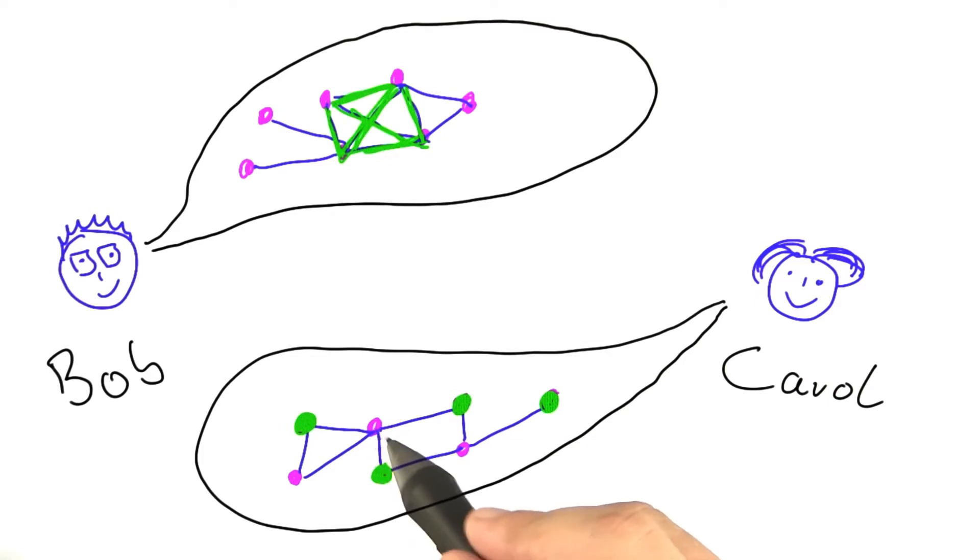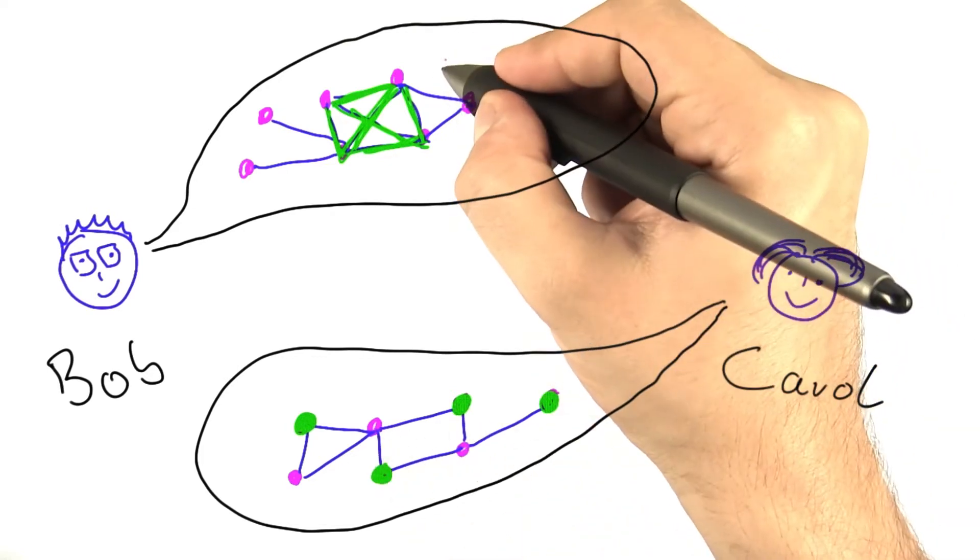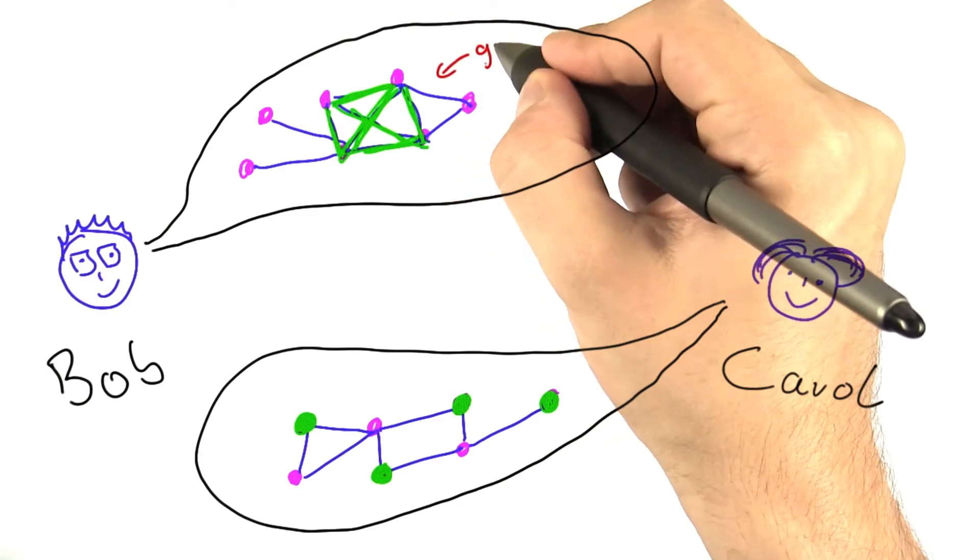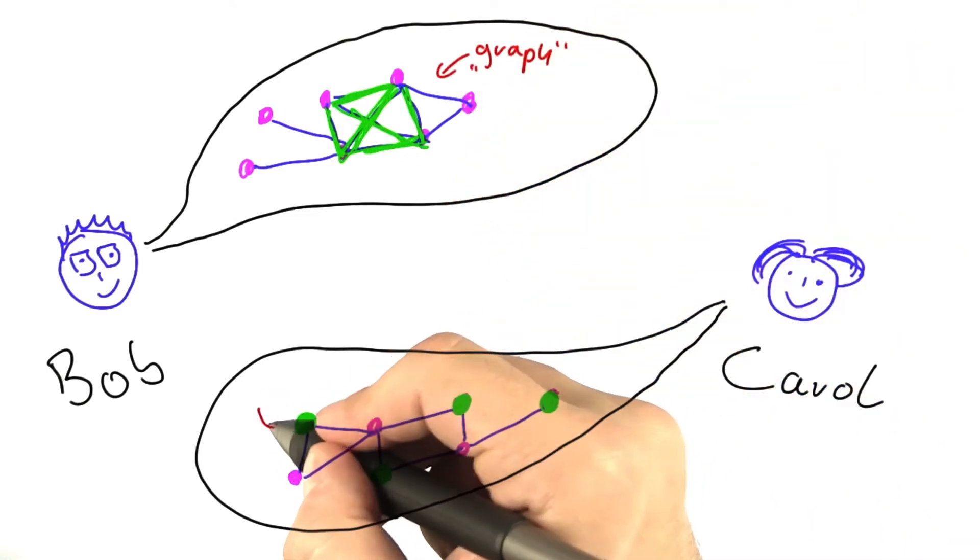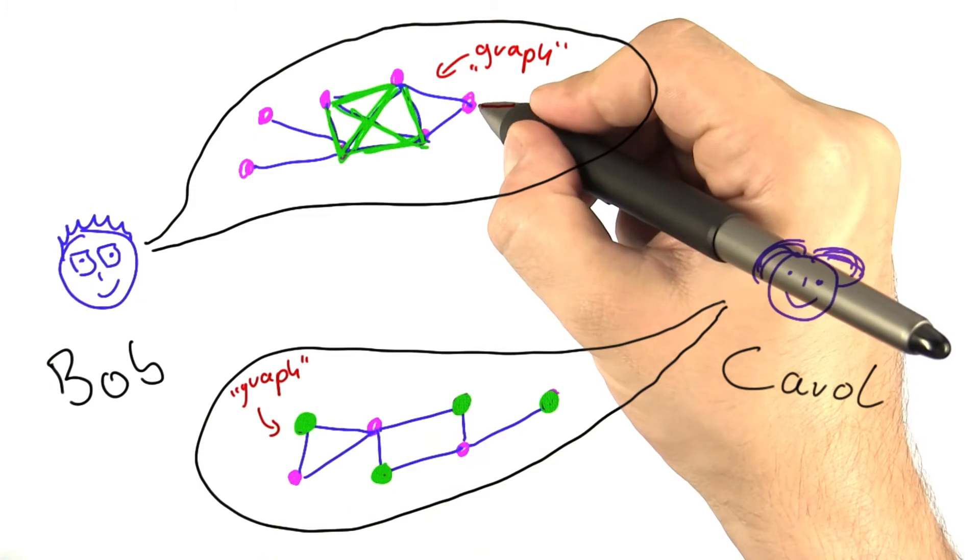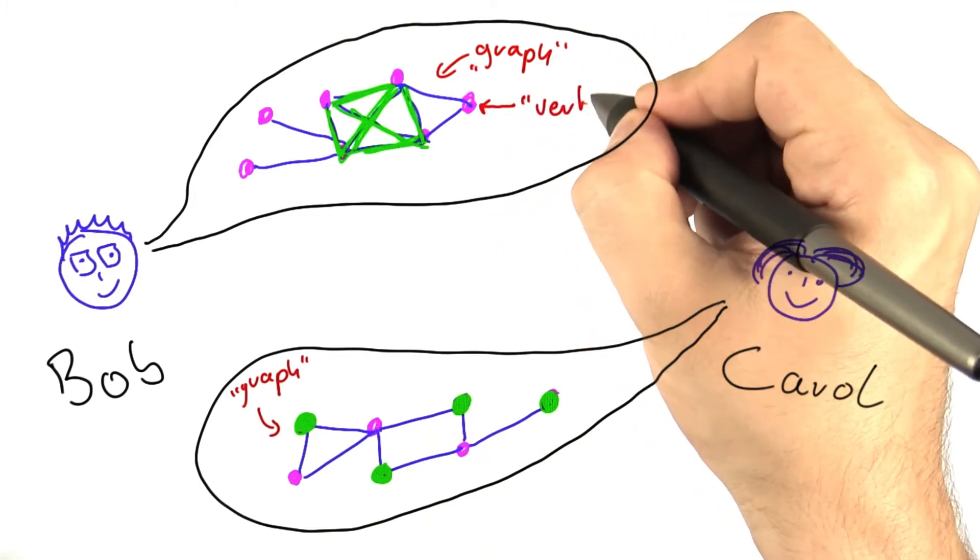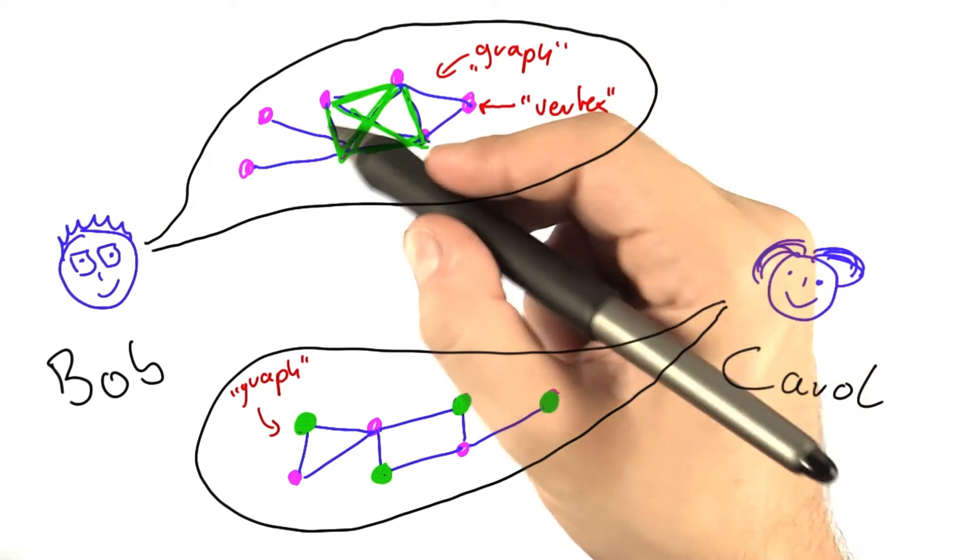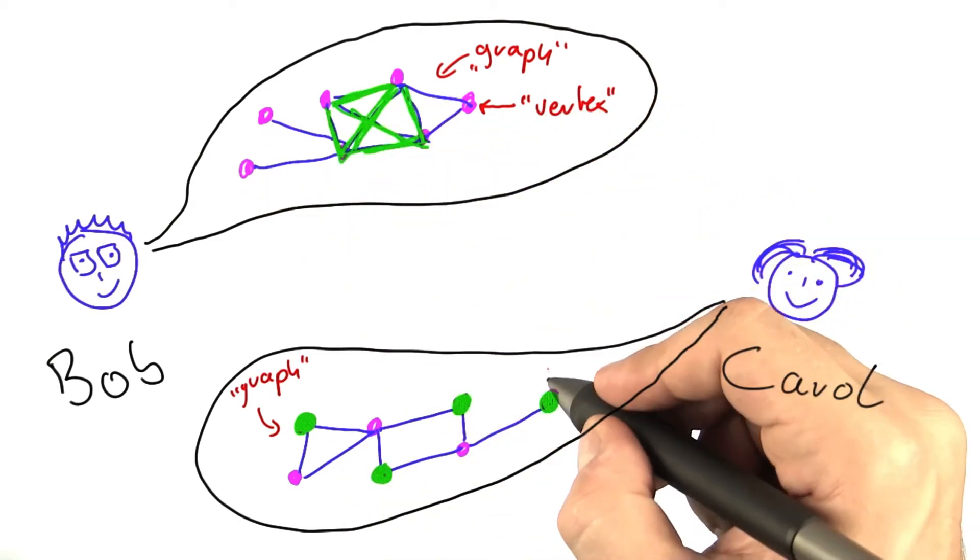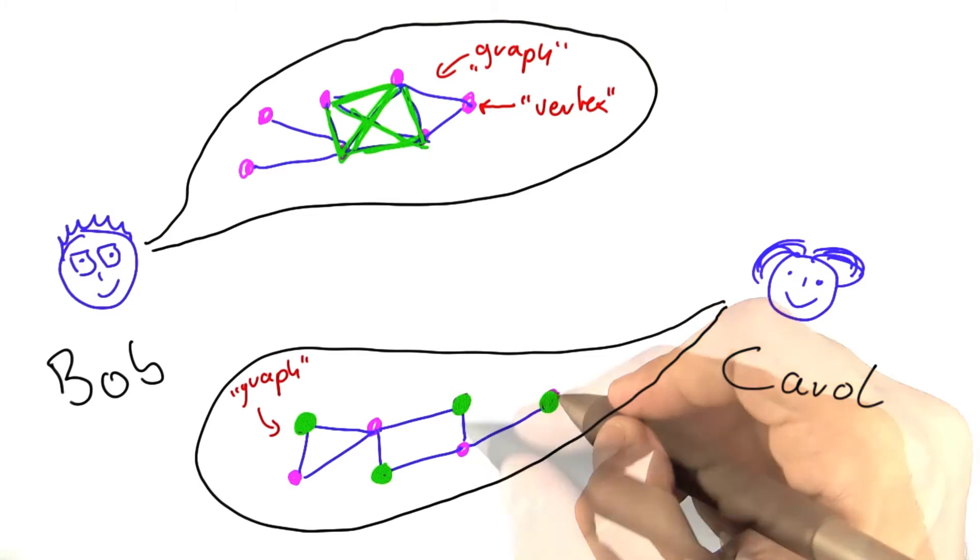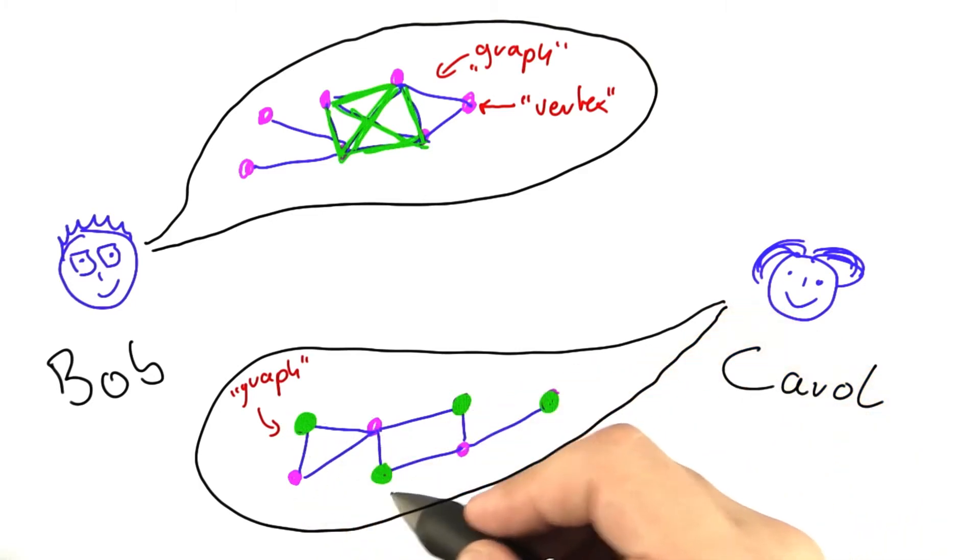And graphs are basically just objects that are connected to each other. So the network up here would be called a graph, and the network down here would also be called a graph. This here, the object, would be called a vertex. And of course, this, this, and all of these objects here are vertices, so this would also be a vertex here, either the purple or the green ones.